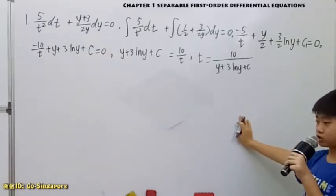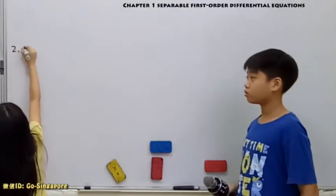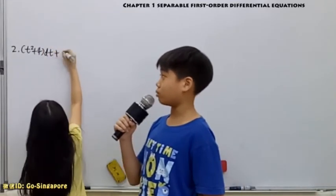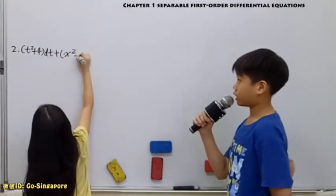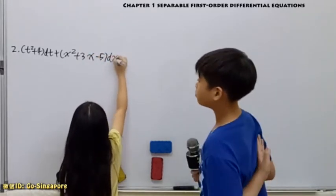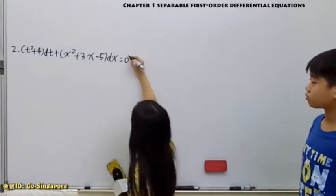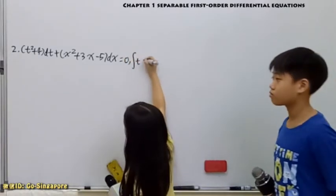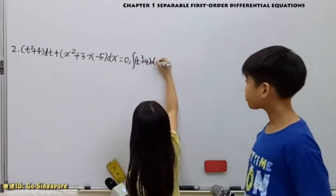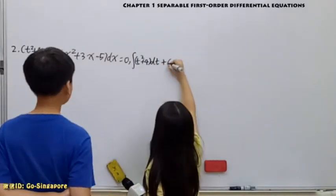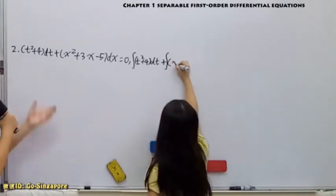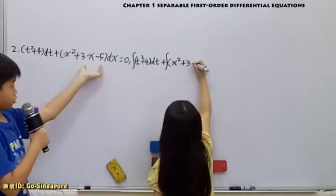Next, we'll move on to the second question. We'll have the second question, which is the bracket t squared plus 4 bracket t plus bracket x squared plus 3x minus 5 bracket dx equals 0. And remember, the t stays together, the x stays together.